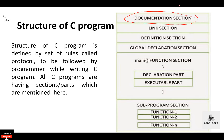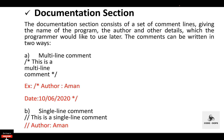The first is the documentation section. This section consists of the description of a program, the name of the program, and the creation date and time. It is specified at the start of the program in the form of comments. There are two types of comments: single line comments and multi-line comments. In C programming, single line comments are written using two forward slashes, and multi-line comments are created using slash-star, followed by the comment lines, then star-slash.